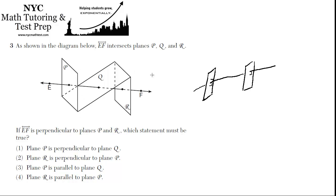So if you apply that to this drawing, they're telling us that EF is perpendicular to planes P and R. So this is plane P, so this is intersecting at a right angle. And this is plane R, so this is intersecting at a right angle. So planes P and R must be parallel.